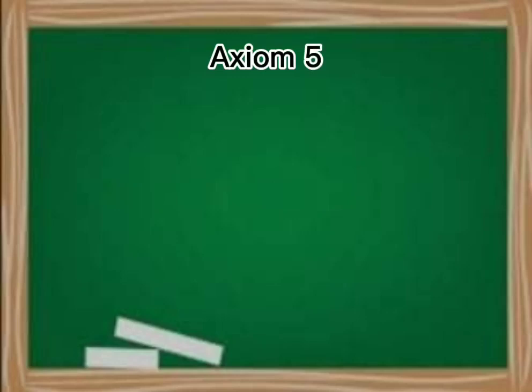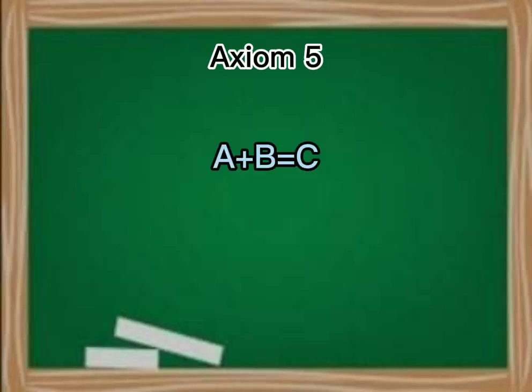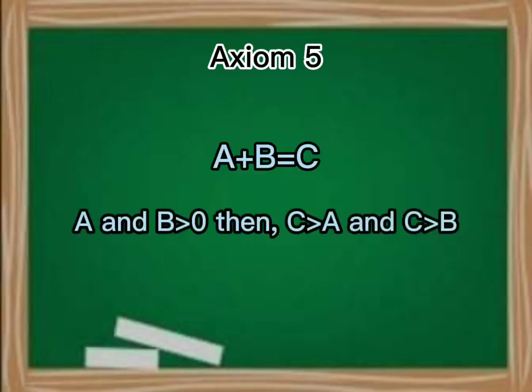And for axiom 5, the whole or sum is greater than the parts. For example, A plus B is equal to C. A and B is greater than 0, then C is greater than A and C is greater than B.